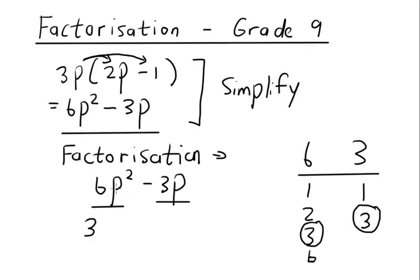So we take out 3 as a common factor in terms of the numbers. When it comes to the variables — in this case our variable is p, though it could be x, y, a, or b — the highest common factor of p squared and p is p. What you'll notice is that when it comes to the variable, you take the variable with the lowest degree. The invisible degree on p is 1, so we don't need to write that 1. We then open the brackets and take each term — term 1 and term 2.